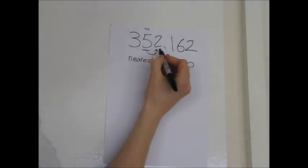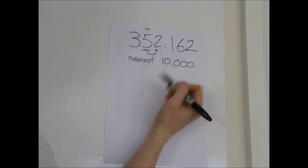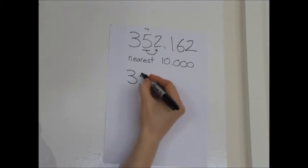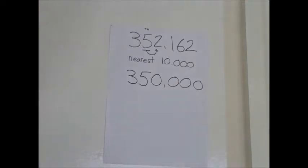Okay, so using that rhyme, this is going to stay the same. Everything in front of that digit is going to stay the same, so it's going to be three, five. And all the digits behind it should be zero. So the new number will be rounded to the nearest ten thousand, will be three hundred and fifty thousand.